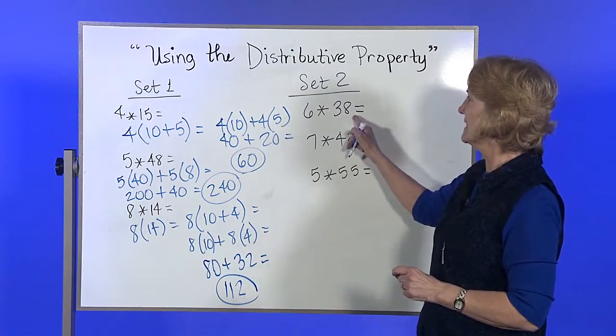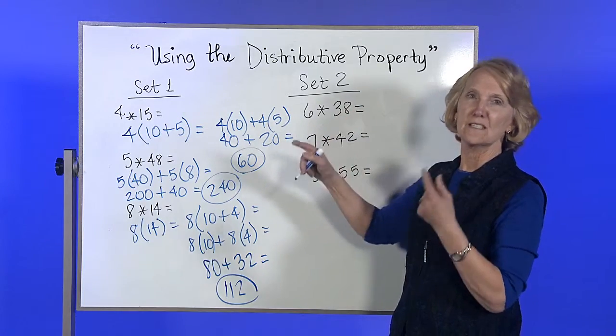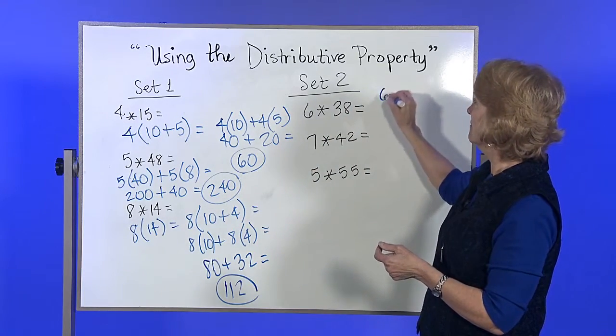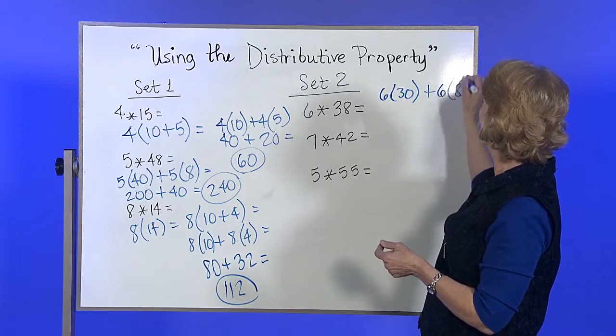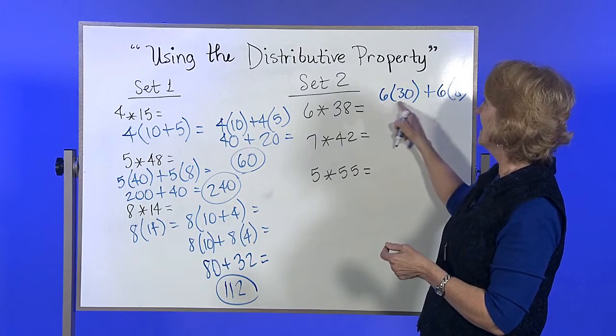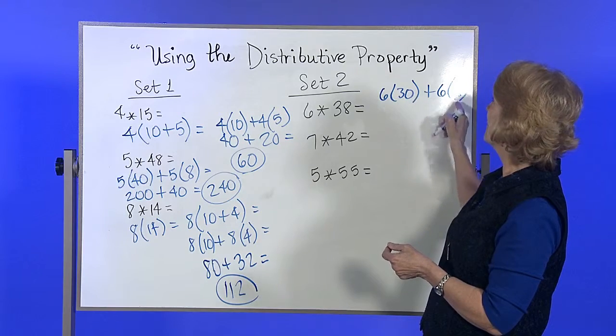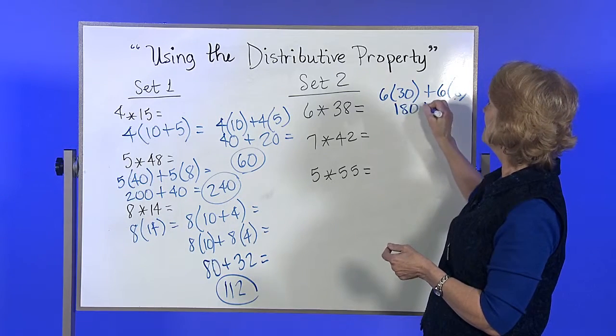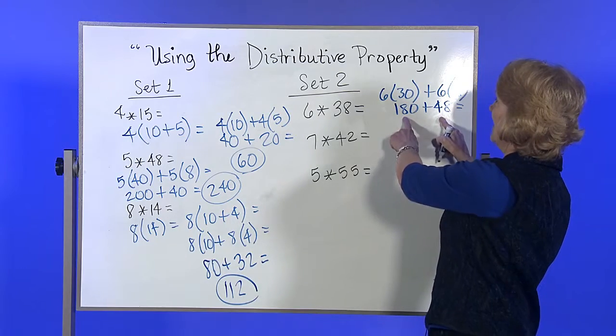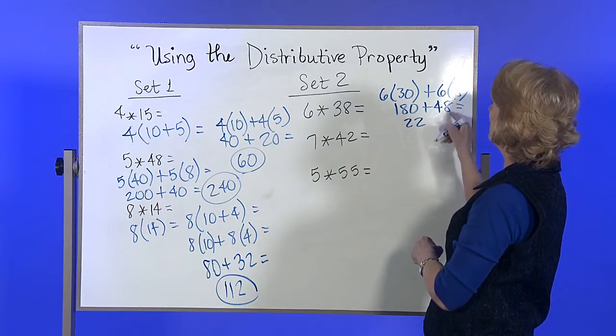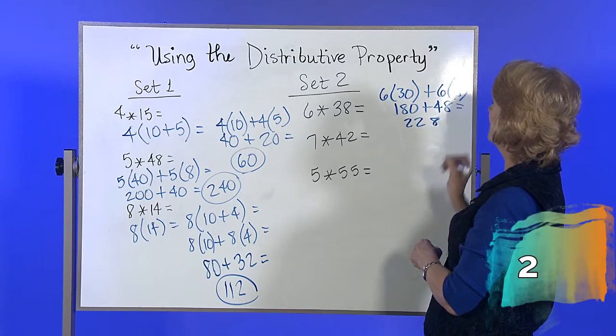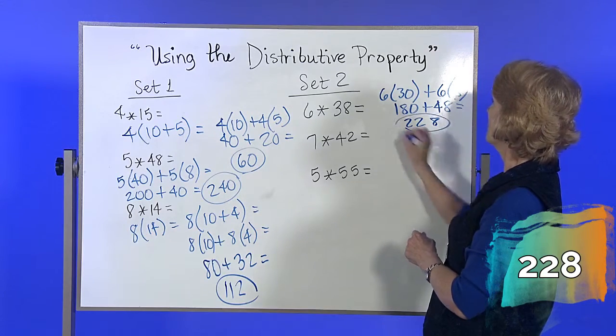6 times 38 is 6 times 30 plus 6 times 8. Now I want you to get so fast, 180 plus 48. The only things you really add are this 18 and 4, and you get 22, so 228.